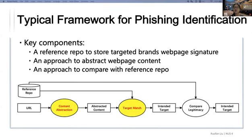The typical framework for phishing identification is as follows. Since we need to find a targeted brand for a phishing website, we need to keep a reference repo to store the targeted brand's webpage signature. Secondly, when a URL is coming, there should be a content abstraction module to extract the representation of the webpage. Afterward, there will be a target matching module to match the webpage's representation to the reference repo.